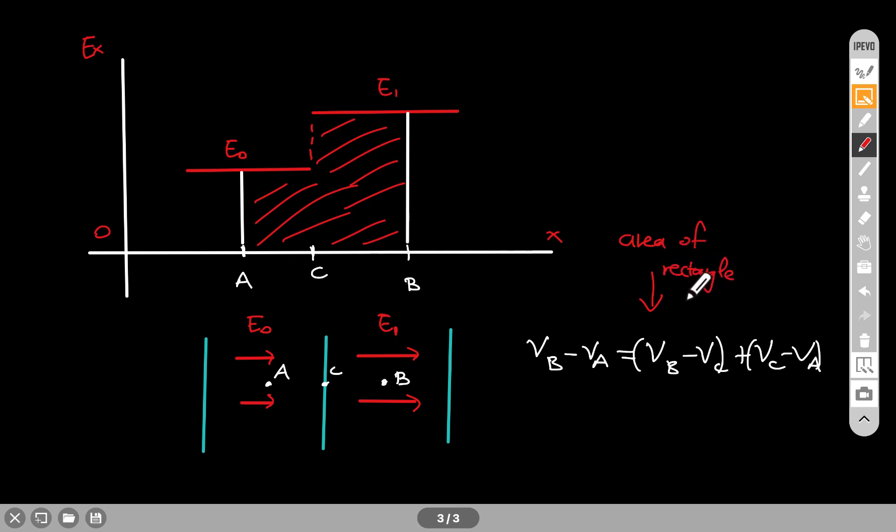a rectangle to calculate for VB minus VC. And you have another area for another rectangle to calculate here. And that is a fairly easy calculation to do.